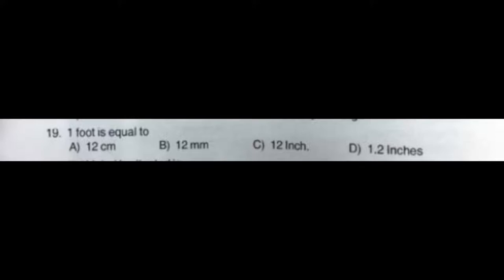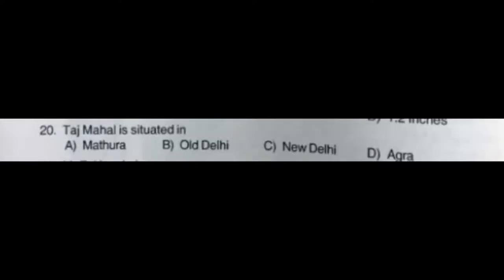Question number nineteen: One foot is equal to — option A: 12 cm, option B: 12 mm, option C: 12 inch, option D: 1.2 inch. The correct answer is option C: 12 inch. Question number twenty: Taj Mahal is situated in — option A: Mathura, option B: Old Delhi, option C: New Delhi, option D: Agra.